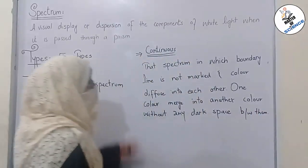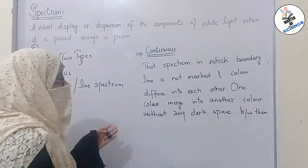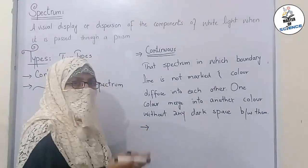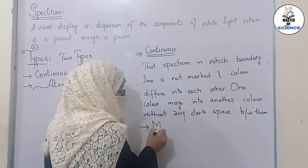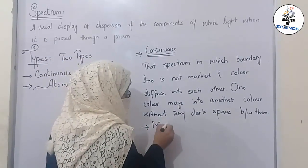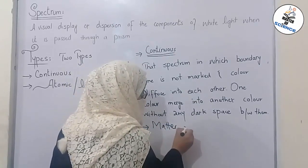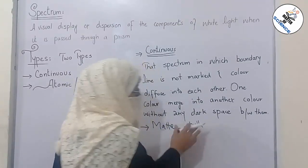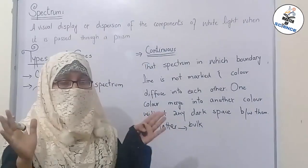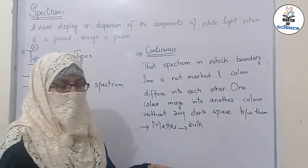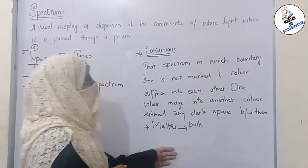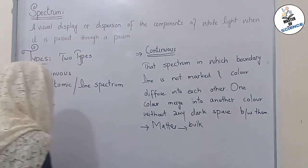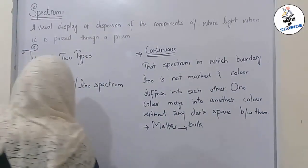Continuous spectrum is the characteristic of matter in bulk — meaning material that is in a large quantity gives a continuous spectrum.